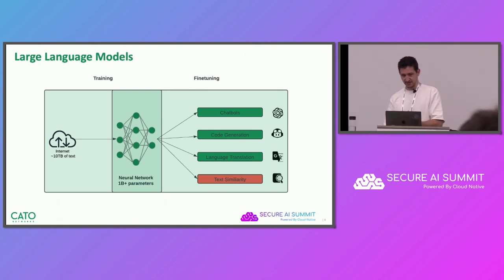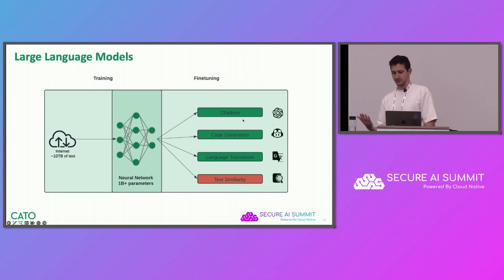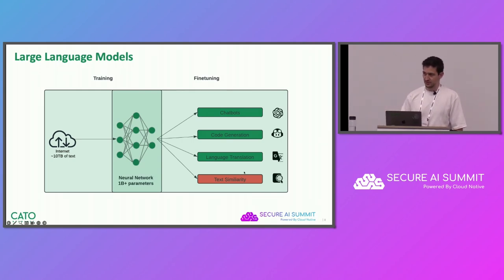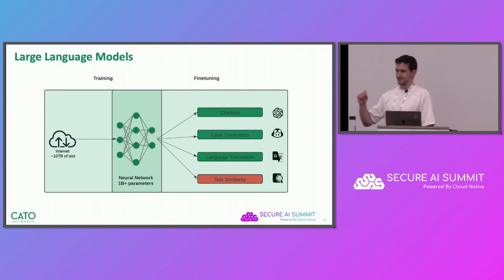Some examples: we can take a foundation model and fine-tune it to create a chatbot like ChatGPT. We can train it to generate code — Copilot is an example. We can train it to translate language, like Google Translate. And the final case we're going to focus on today is training it to do text classification — specifically, fine-tuning a large language model to classify sensitive documents using text similarity techniques.